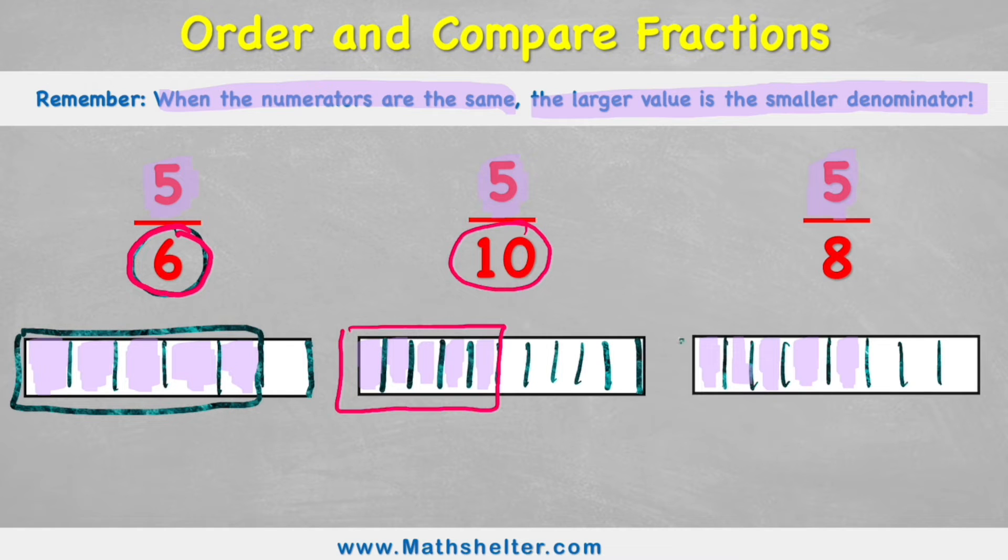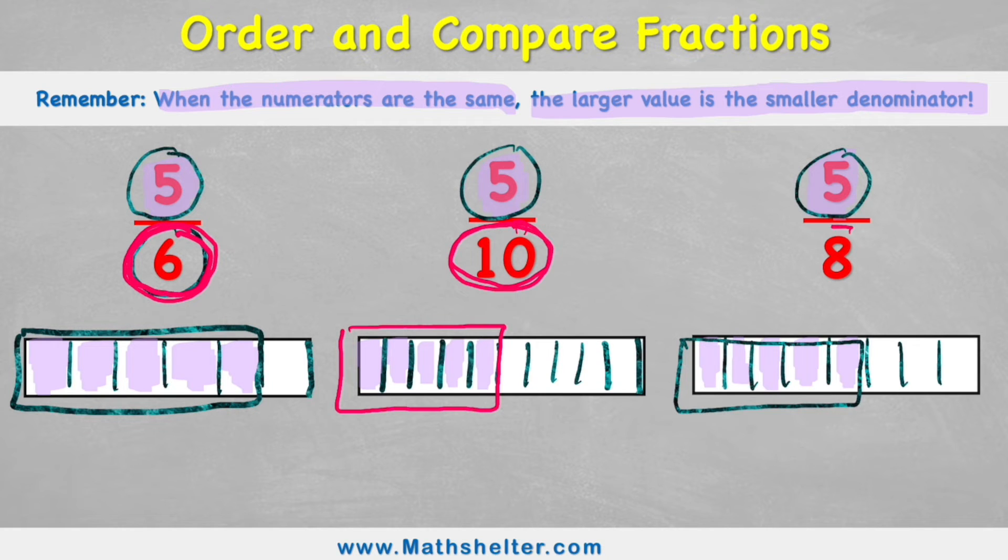Which we can see is just a bit more than half. So even though in all of these fractions, I had the same amount of them, I had five pieces, because they'd been broken down into different amounts of pieces. So this one had six, this one had ten, and this one had eight pieces. That determines, that tells us how big my pieces are going to be. So let's put them in order.